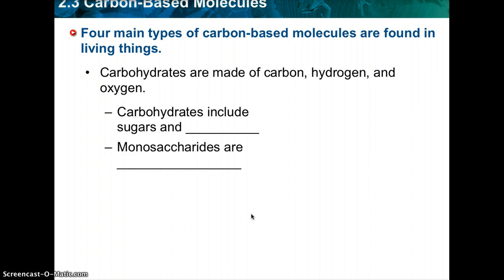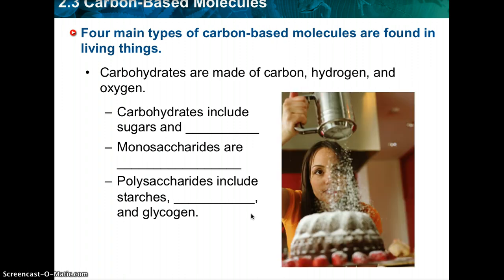So you have monosaccharide and polysaccharide, which are what we're going to talk about. Monosaccharides are simple sugars. The word saccharide is actually Greek, which means sugar. So polysaccharides means many sugars, so that includes starches, cellulose, and glycogen. And there's some sugar on top of a cake.